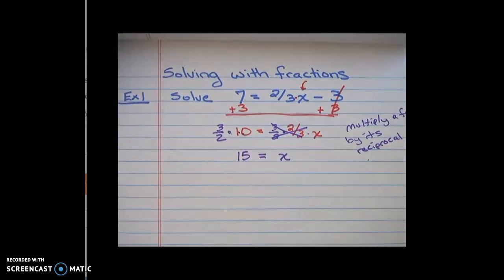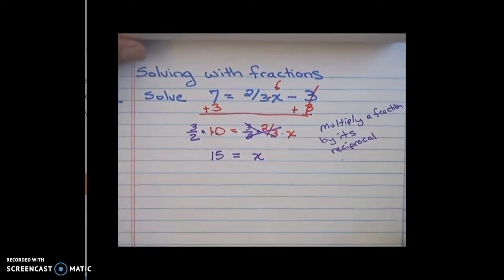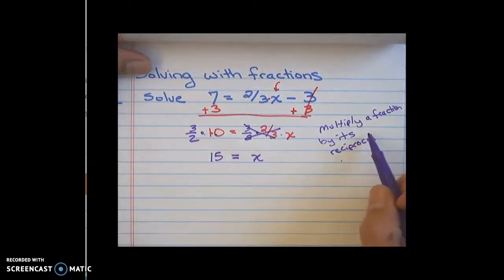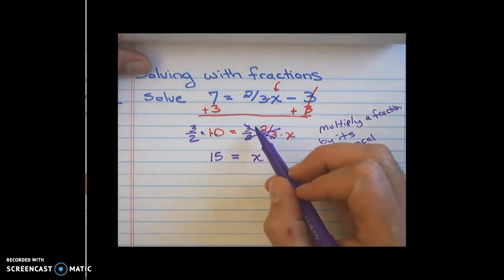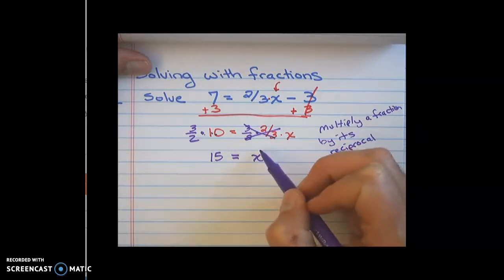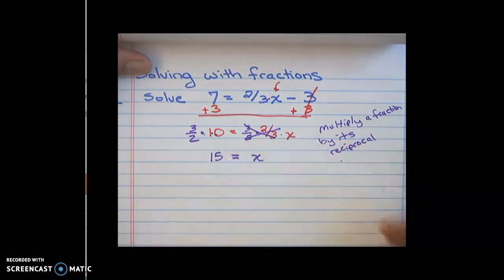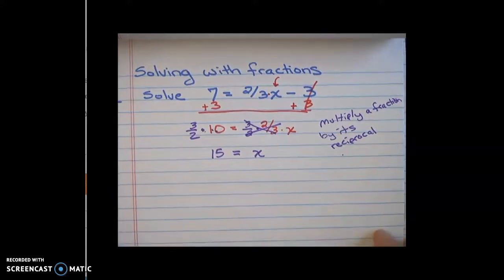So this would give me 15 is equal to x. And then x is all by itself. So I just want you to know if you have a fraction, we're going to multiply that fraction by its reciprocal. And then what that happens is it turns it into 1. 1x is just x. And so we can just kind of cancel it out. It becomes real nice to solve problems like that.